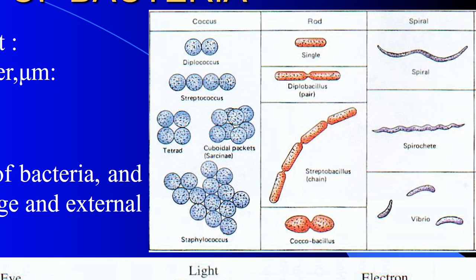This is the diplococcus — 2 bacteria. Diplococcus is 2 coccus, or the bacteria with a round shape. Coccus bacteria have a round shape like structure. Streptococcus is a rod chain-like structure. This is a gate-like structure.